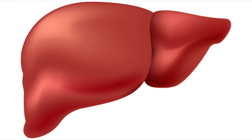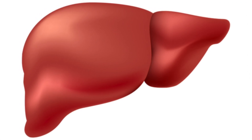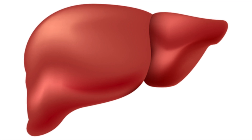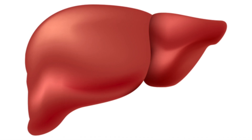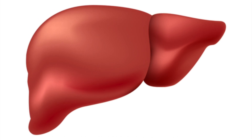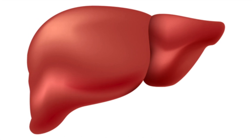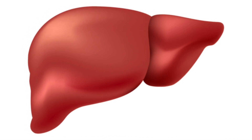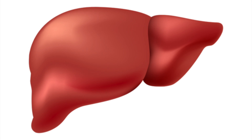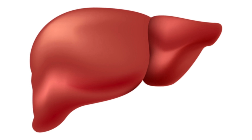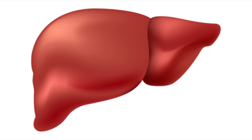There are two different sources that supply blood to the liver. Oxygenated blood flows in from the hepatic artery. Nutrient-rich blood flows in from the hepatic portal vein.